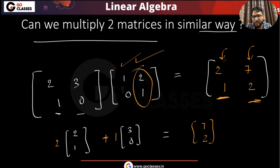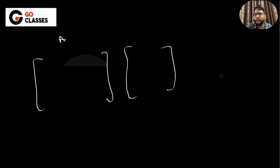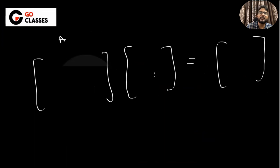So if I ask you: is this result a linear combination of the columns of A, you will say yes. Is this other column also a linear combination of columns of A, you will say yes. So A times B, or any two matrices multiplied — whatever you get on the right-hand side is a linear combination of the columns of A.